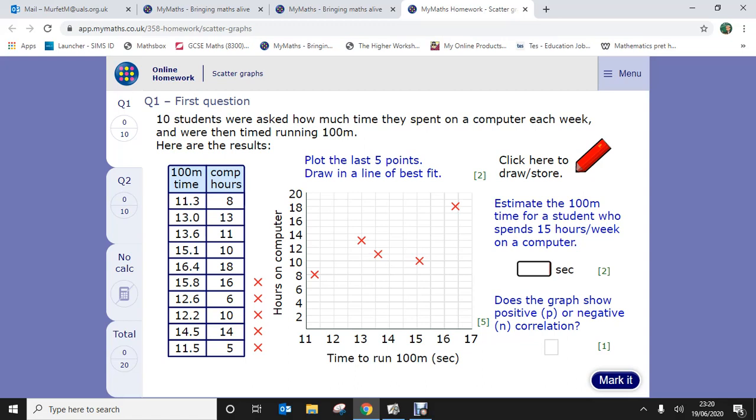We've got 11.3 and then 8, 13, 13, and so on. So we're going to plot these next five points. We're going to go along the corridor and then up the stairs. So 15.8 will be somewhere here and then up to 16. As long as you hold it and you're within maybe half a square, it will pin it to the right location. So 12.6 just over there and 6.